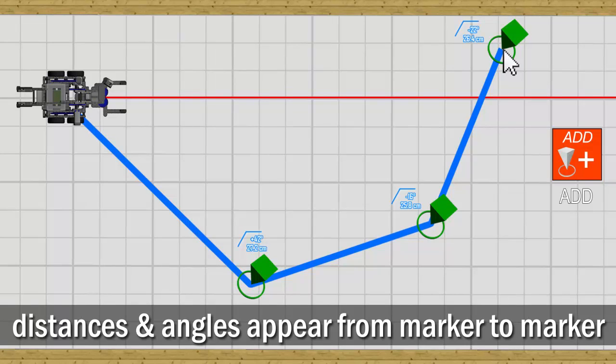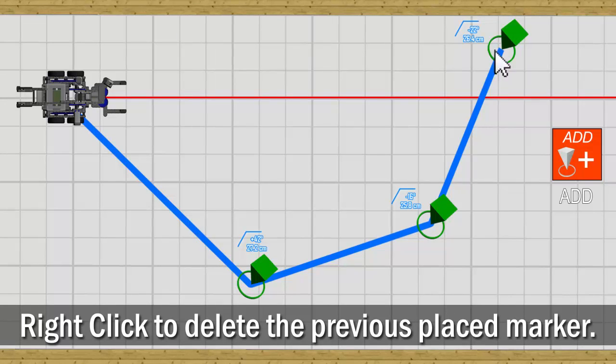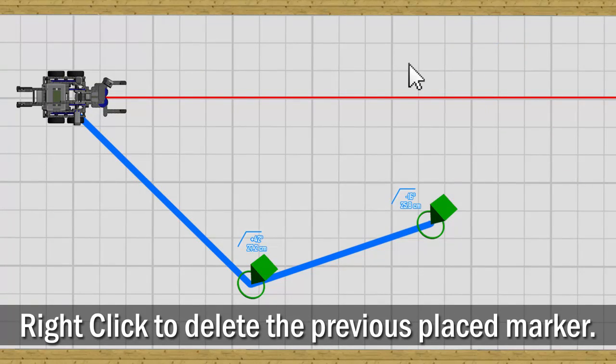If you are unhappy with the location of any of the markers placed, you can always step back by right-clicking your mouse to delete the most recently created marker.